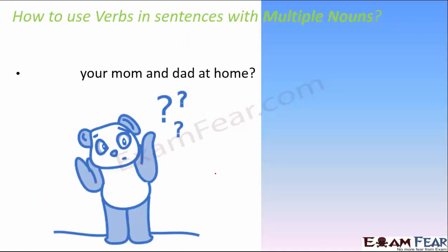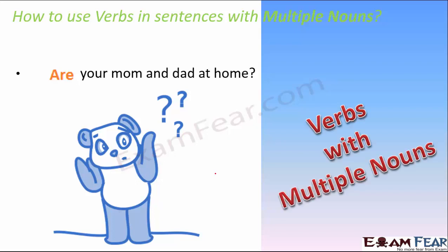Let us first understand how to use verbs in sentences with multiple nouns. Let's say, if you have a sentence like 'Is your mom and dad at home?' — is this correct? Or, 'Are your mom and dad at home?' This could be a great confusion — whether it's going to be 'is' or 'are' — because here we are talking about mom and dad, two nouns. So what should the verb be — singular or plural?